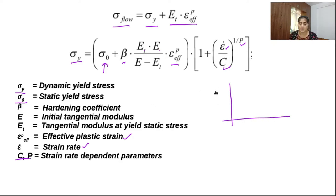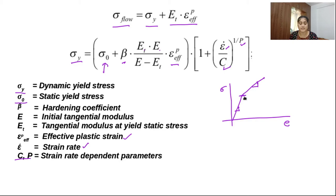If we see the graph between stress and strain, the slope of the initial elastic region is Young's modulus of elasticity, or we can say initial tangential modulus. And what is the slope of this graph after yielding, when plasticity comes — whatever the slope of that graph is called the tangential modulus at yield static stress. That is the tangential modulus ET, and this is E.